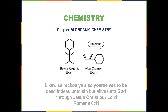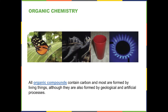We're going to talk about organic chemistry, which is basically the study of carbon chemistry. Carbon is a unique atom in that it has four binding sites and it can bind in an enormous number of different ways. Because of that, its chemistry is much more complex than many other atoms, so we're going to talk about carbon chemistry in a separate two-lecture series. All organic compounds contain carbon and most are formed by living things, although they are also formed in geological and artificial processes as well.